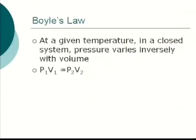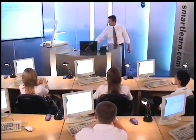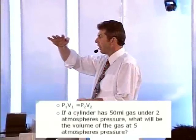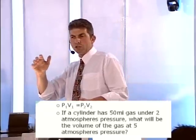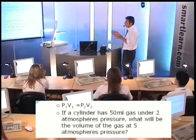P1 V1 equals P2 V2. That sounds initially complex, but when we go through a worked example it's not as complex as you might think. Here's the question: if a cylinder has 50 millilitres of gas under 2 atmospheres pressure, what will be the volume of gas at 5 atmospheres pressure? A cylinder — just like a bicycle pump — has 50 millilitres, and we need to calculate using P1 V1 = P2 V2.